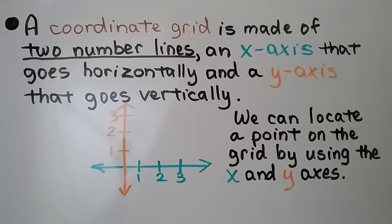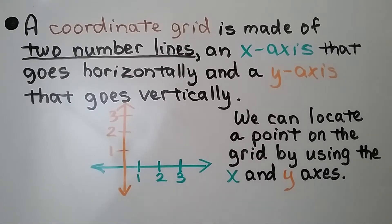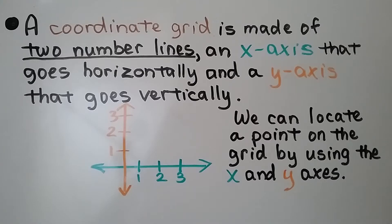A coordinate grid is made of two number lines, an x-axis that goes horizontally and a y-axis that goes vertically. And we can locate a point on the grid by using the x and y-axis.